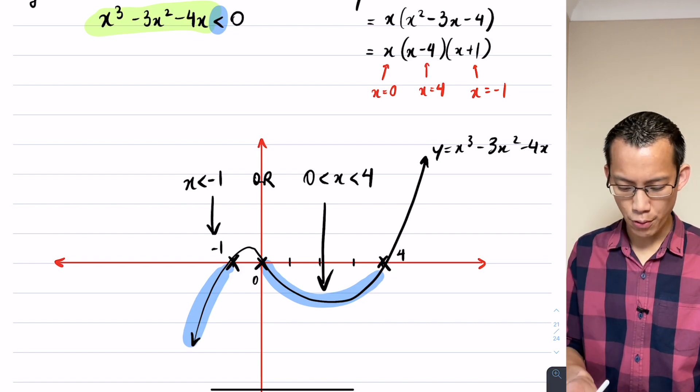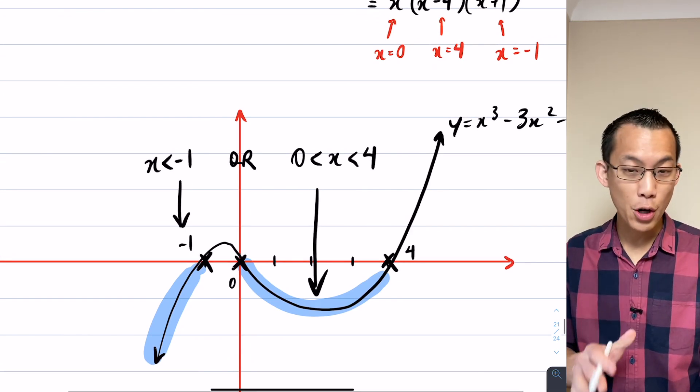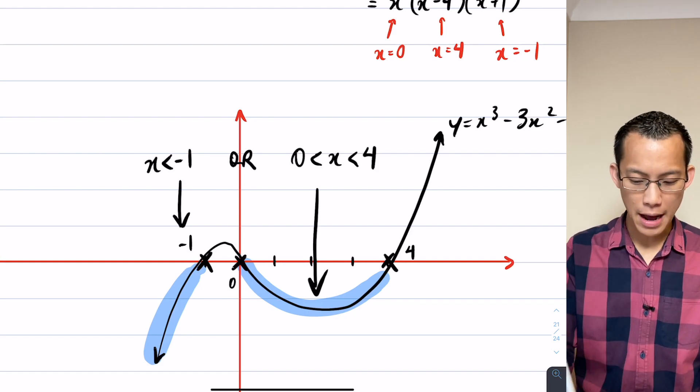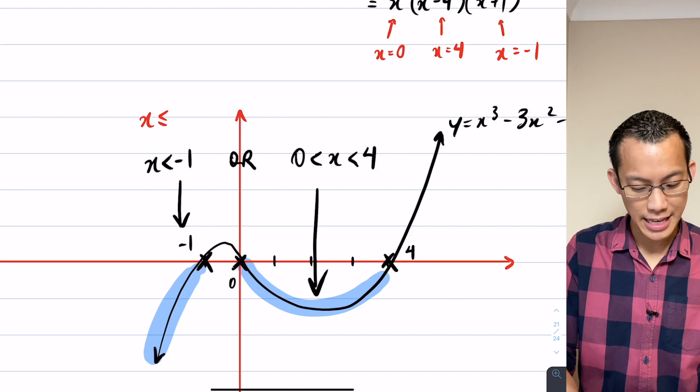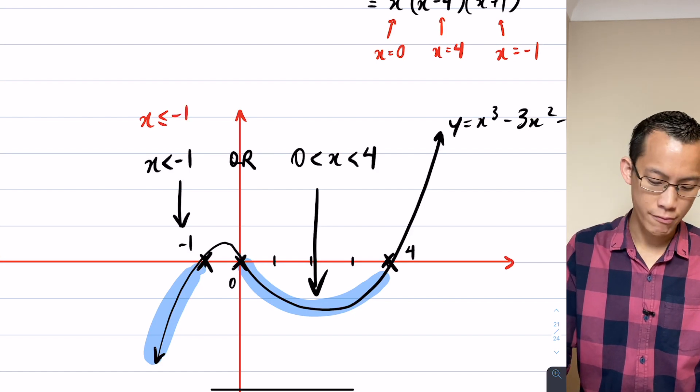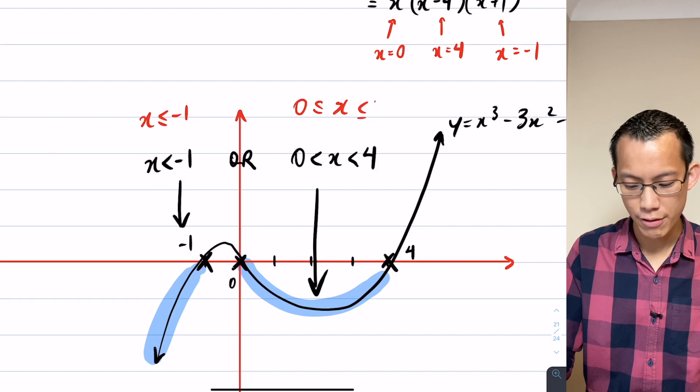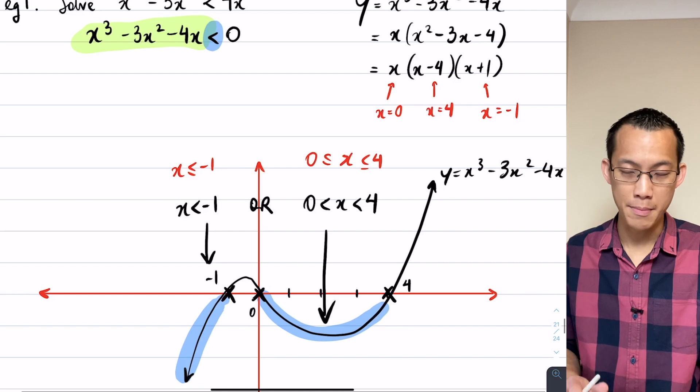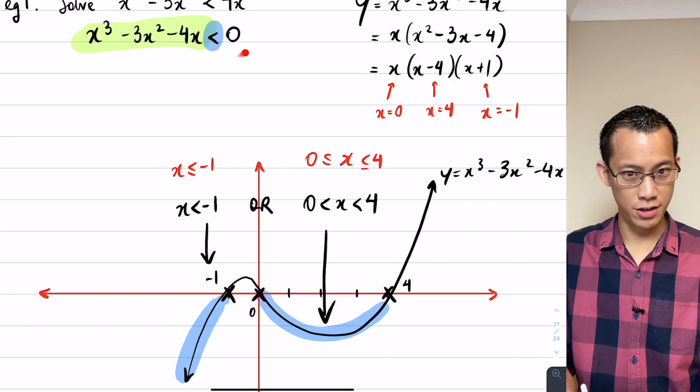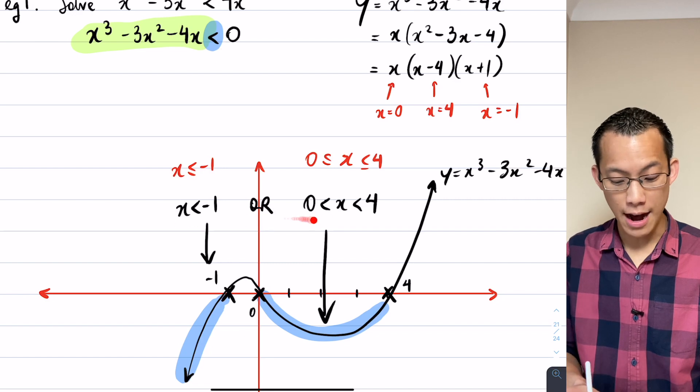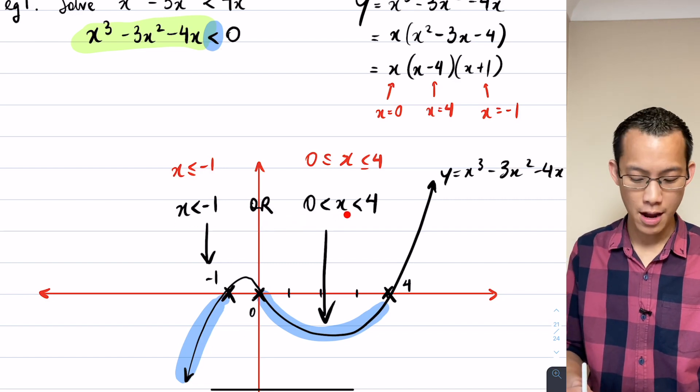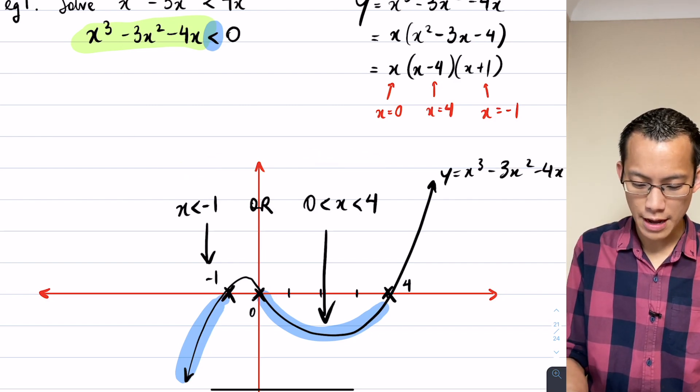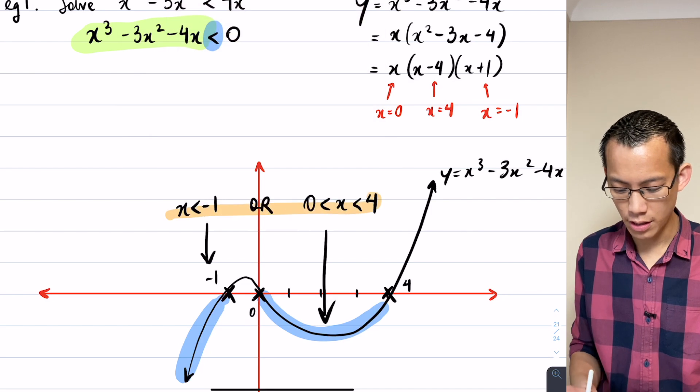I would say it's x is less than negative 1, or from 0 is less than x is less than 4. There are my boundaries. Now a quick question that should be pointed out. You might notice my inequalities there. They don't actually include the boundaries negative 1, or 0, or 4. I haven't written x is less than or equal to negative 1. I haven't written 0 is less than or equal to x, which is less than or equal to 4. How could I tell that I should not include the boundary? The answer is, have a look back at the original question. You see the original question doesn't include the boundary, so my answer will not include the boundary either. But we will be careful with that.